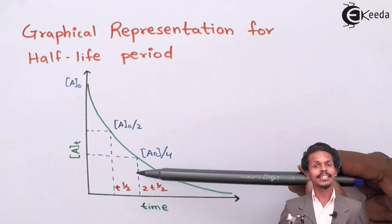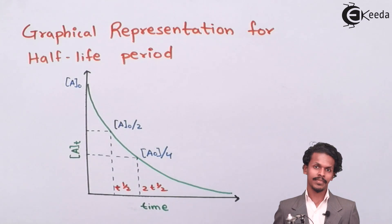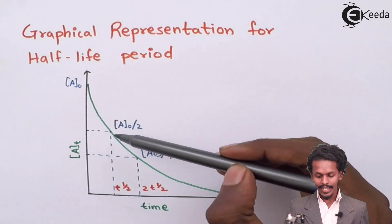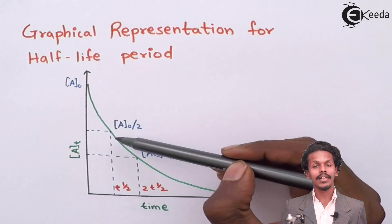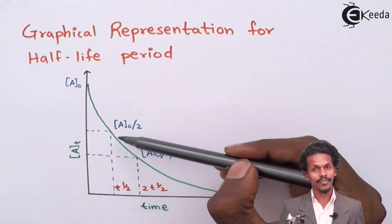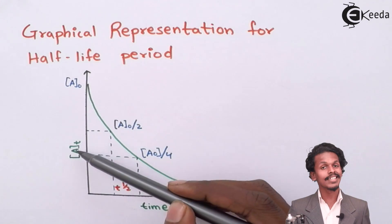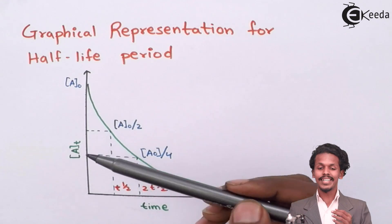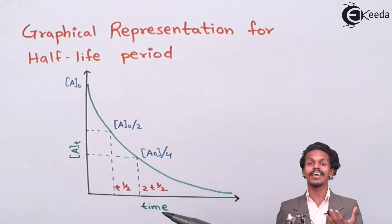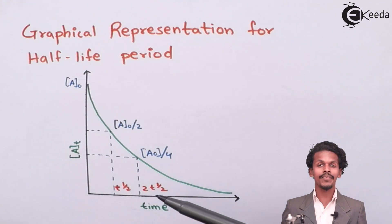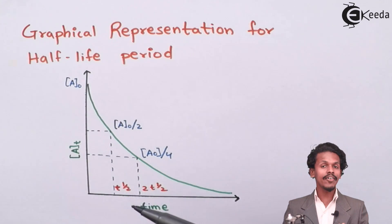As you can see, the initial concentration A0 will go on decreasing as time moves, so finally we get a concentration which is half of the initial and that is nothing but A0 by 2.